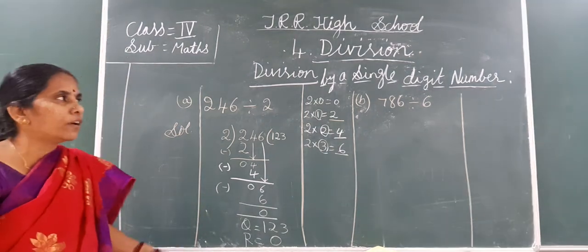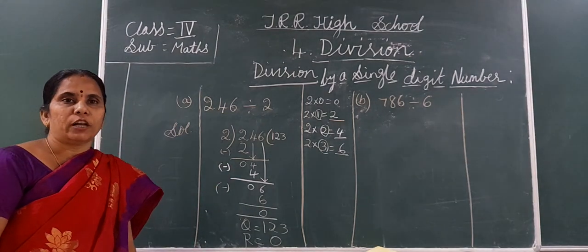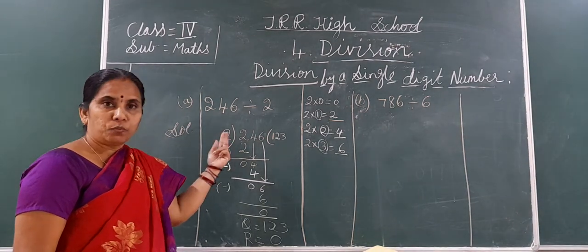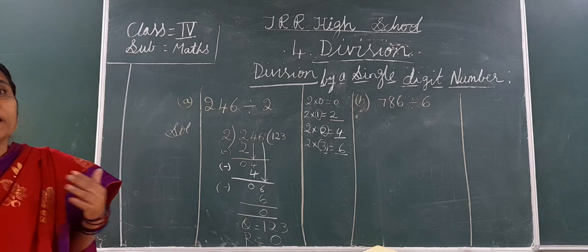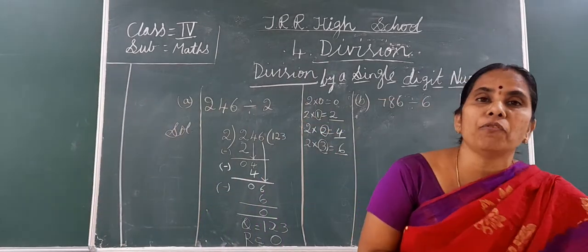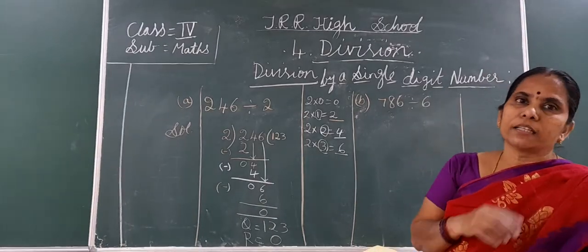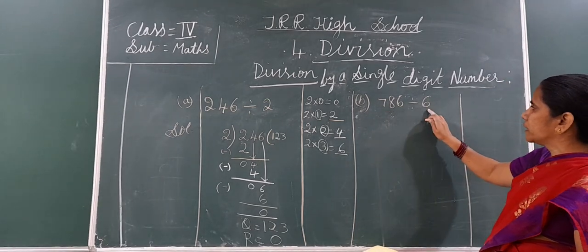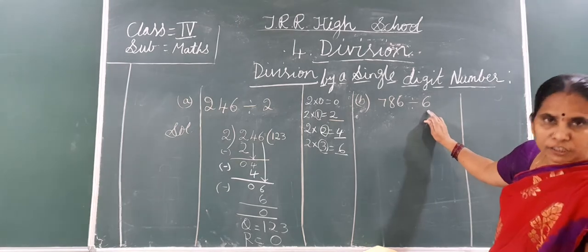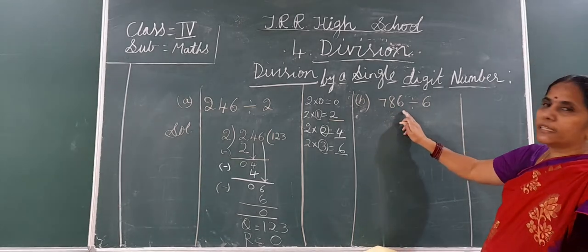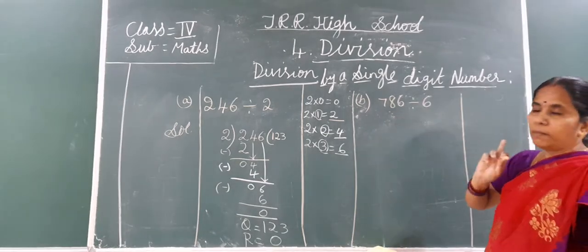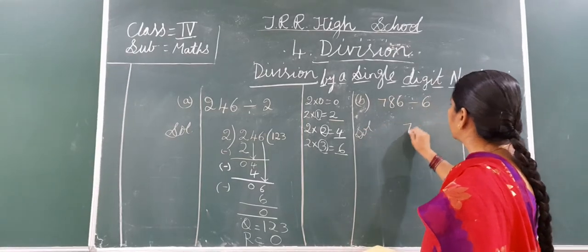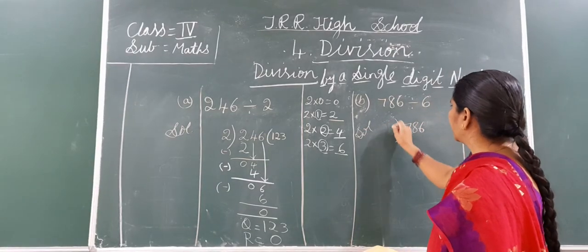I think you understood the first one. We will do the second one also. In the first one we got the same number, so we took only 1 digit. Now in the second one I will say what we must do — whether we must take 2 digits or 1 digit. Here: 786 divided by 6. 6 is the divisor, 786 is the dividend. Remember it. Now here we will write 786 and here 6.